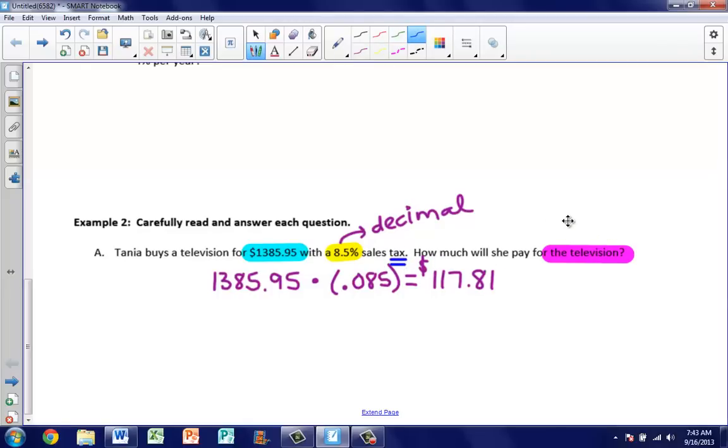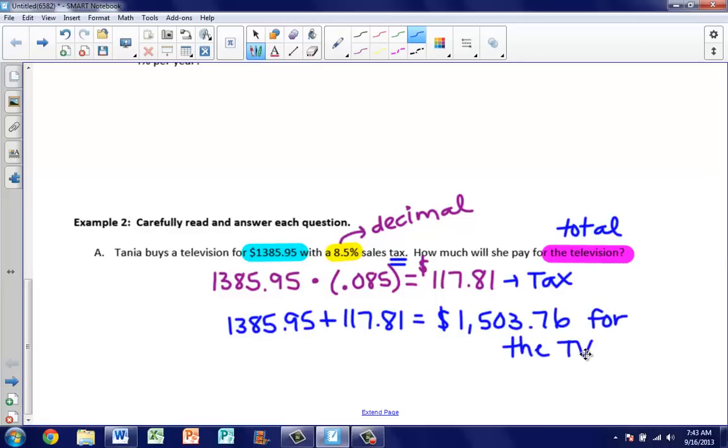We want to know how much will she pay for the total with the television price and the tax. So if this is just your tax, what we have to do then is take your original price of the TV and add what she's paying for sales tax. In this case, 117.81. When we do that, we end up with $1,503.76. So how much will she pay for the television? She will pay this much for the TV.